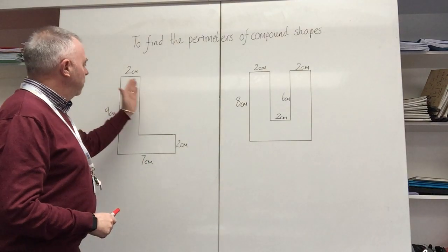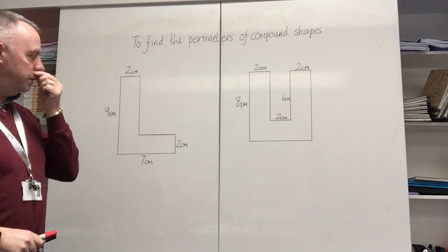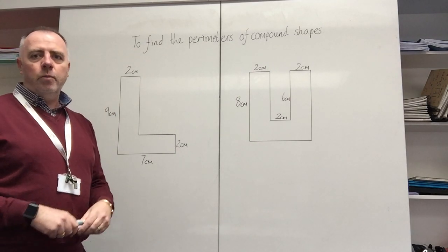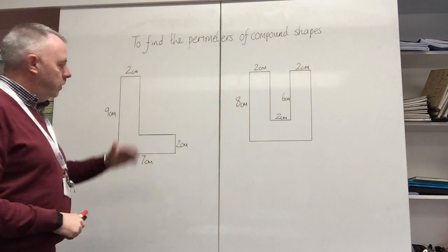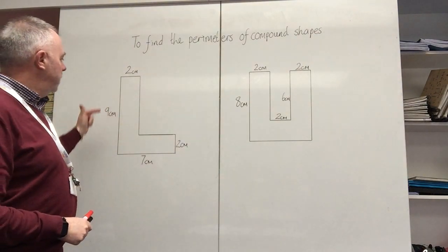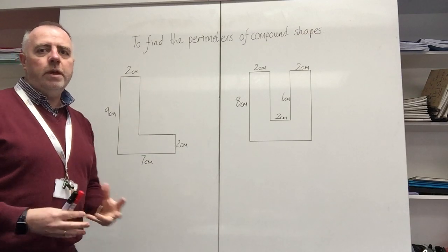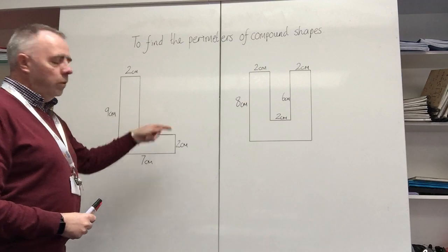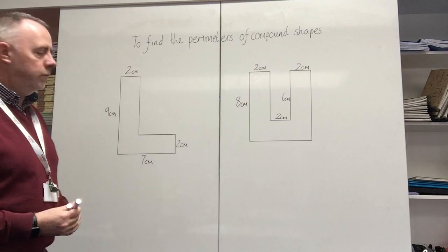You'll probably also notice on both of these shapes that we've got some measurements which are missing. So the first thing you need to do is use the relevant measurements that you're given to work out what the distances are that you're not given.